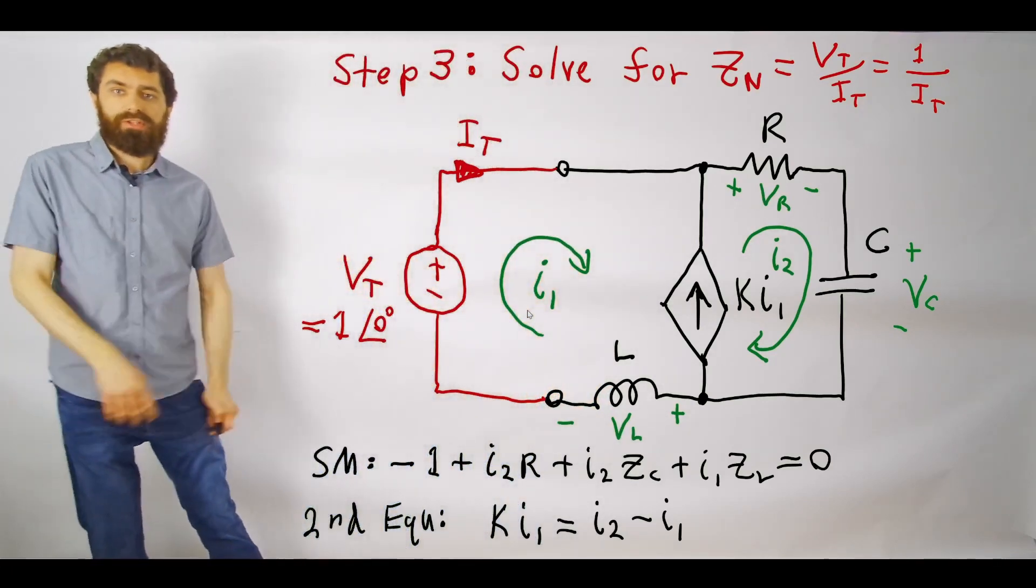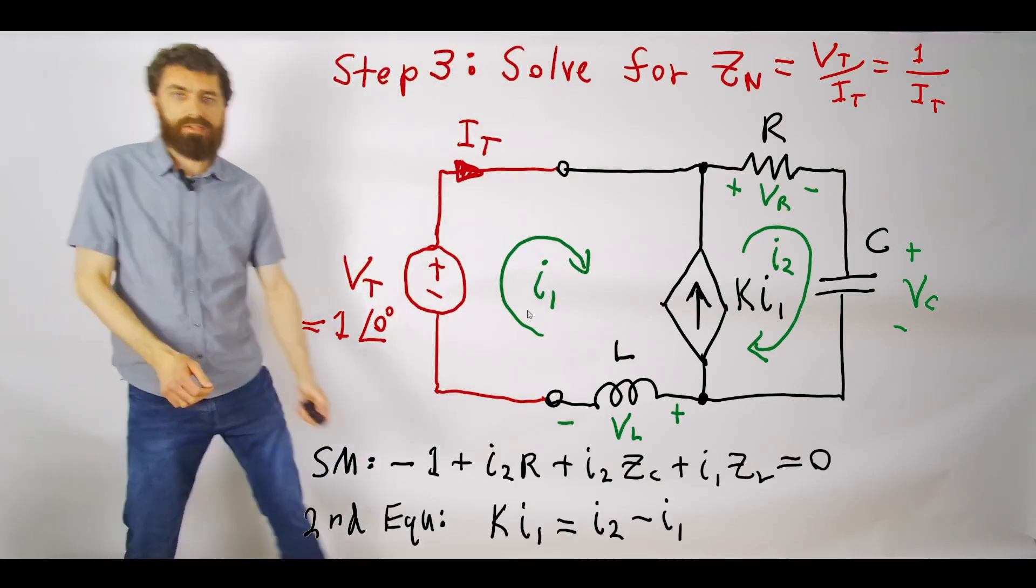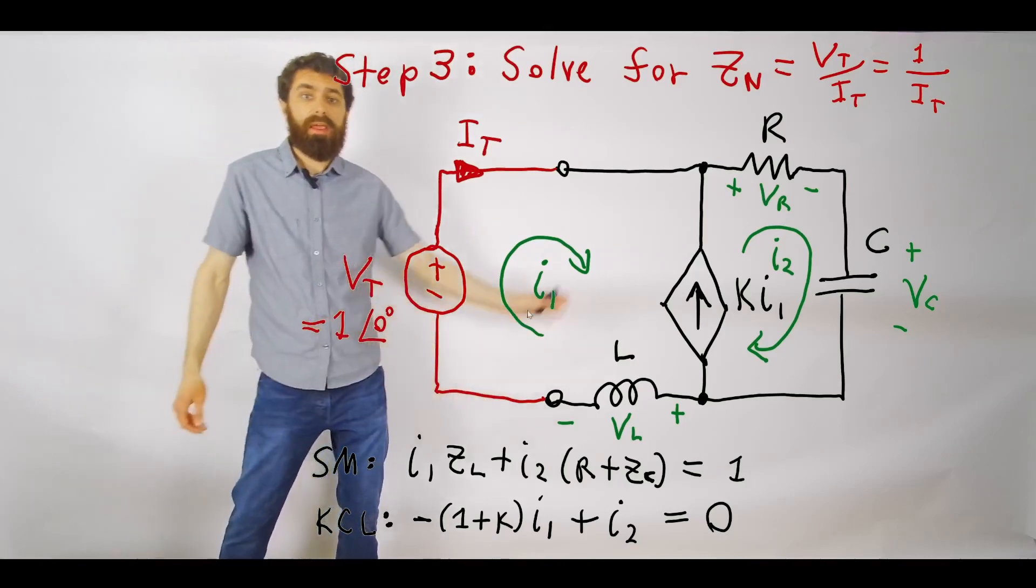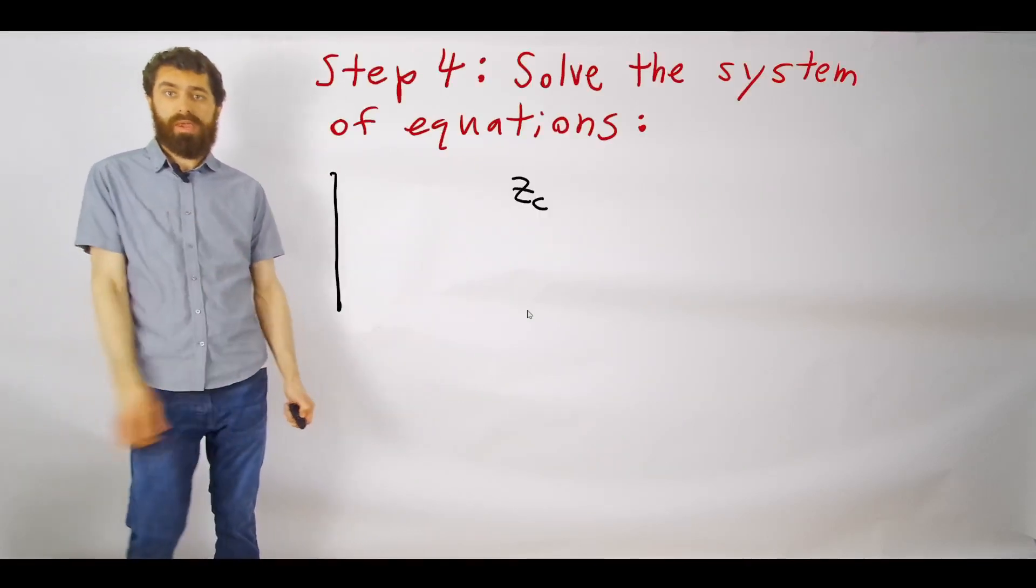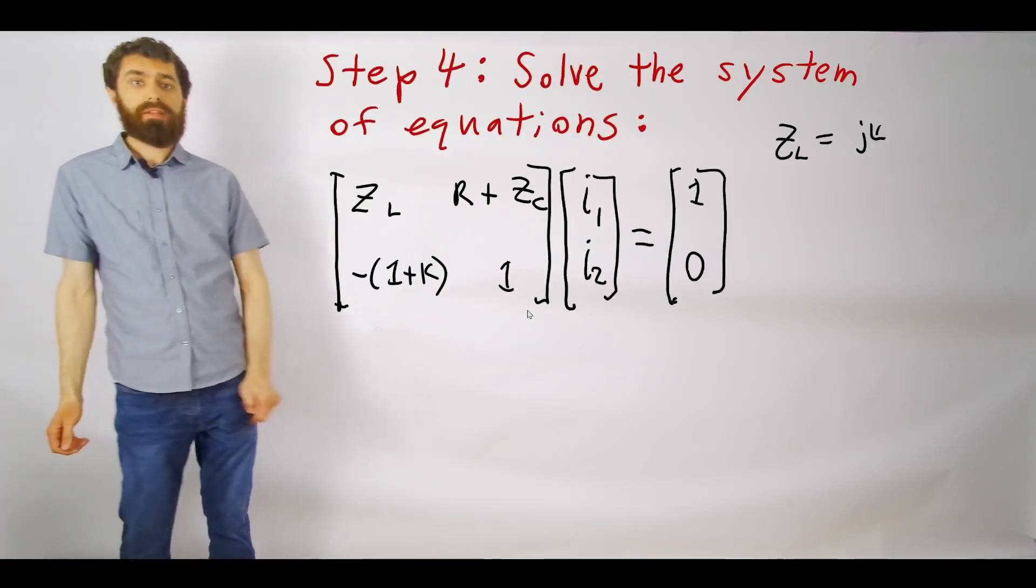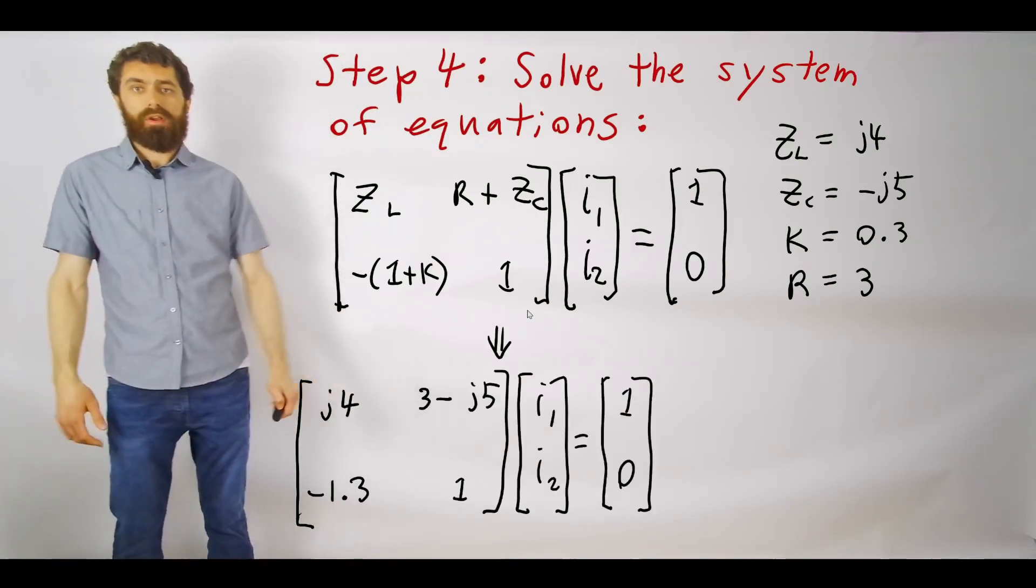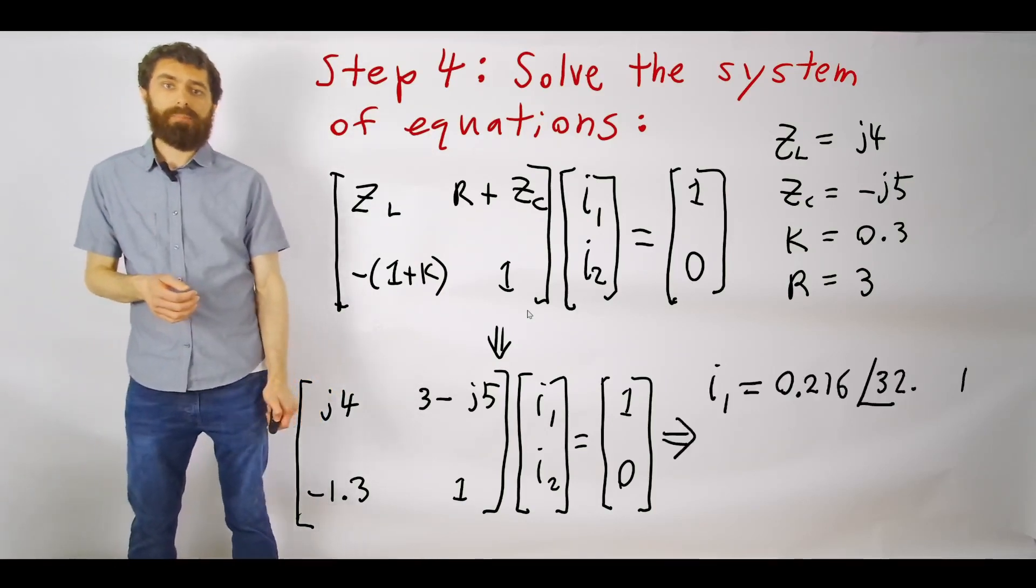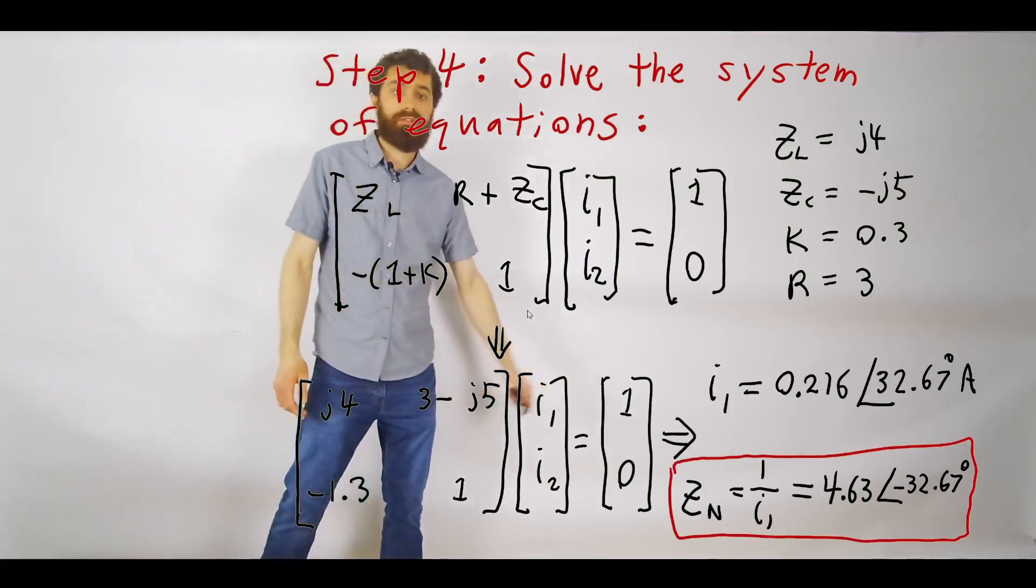We have our two equations, our two unknowns, now we can solve it. You can see what I did here is I took these two equations and I simplified them so that you have your variables on one side and then your constants on the other side. Then I can go ahead and put these into a matrix. Plug in the values that we were given and then go ahead and stick this in MATLAB or your calculator. You can get i1 and i2. In this case, we're only interested in i1, so we find out what i1 is. Then we can take the inverse of that and our final answer, our z Norton, is equal to 4.63 angle minus 32.67 degrees.